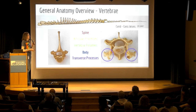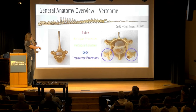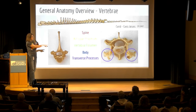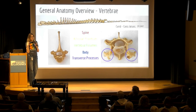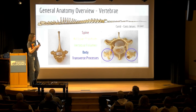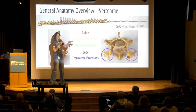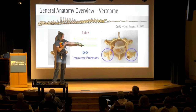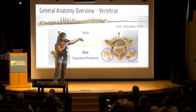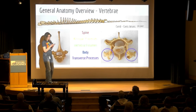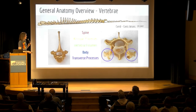The transverse processes — which you don't see as much on the thoracic vertebrae but definitely on the neck vertebrae — are, similar to the spinous process, where muscles attach and run. There are big long strap muscles running up and down the neck and spine, with one muscle belly running above and one below the transverse processes. So those are the basics.